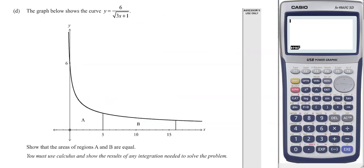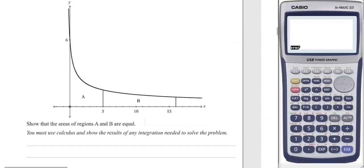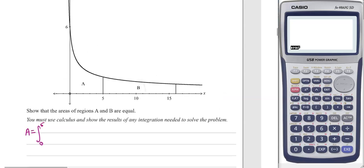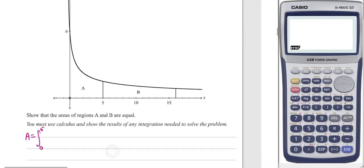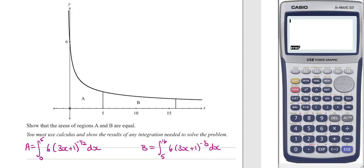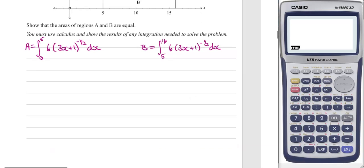On part D, we want to show that the areas under the curve are equal. Those areas are a and b. To find the area under a curve, we're going to integrate. So for area a, we're going to go between 0 and 5. Area b will be the same thing, but integrating from 5 up to 16.